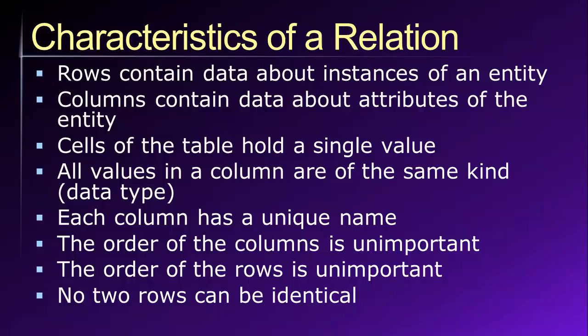Another characteristic of a relation is that no two rows within the table can be identical. This does not mean that we are not allowed to have identical values within a column as we move from row to row. Rather, if we consider the row in its entirety — if we take all of the values in the row together — they cannot be identical to any other row in the table. The final two characteristics of a relation are that the order of the rows and the order of the columns cannot matter.